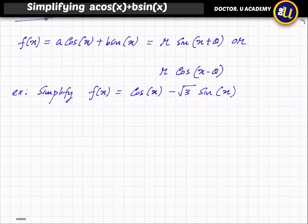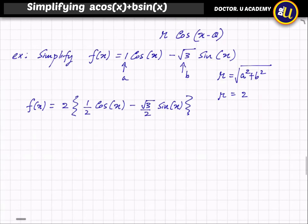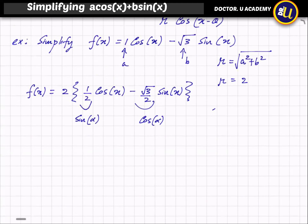In this example we simplify cos(x) − √3·sin(x). The coefficient in front of cos(x) is a = 1 and b = −√3. So R = √(a² + b²) = √(1 + 3) = 2. Taking 2 out gives 2·[(1/2)·cos(x) − (√3/2)·sin(x)]. We let sin(α) = 1/2 and cos(α) = −√3/2.